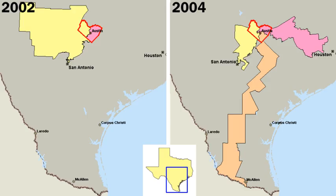Various federal and state laws regulate elections. The United States Constitution defines, to a basic extent, how federal elections are held, in Article I and Article II and various amendments. State law regulates most aspects of electoral law, including primaries, the eligibility of voters beyond the basic constitutional definition, the running of each state's electoral college, and the running of state and local elections.